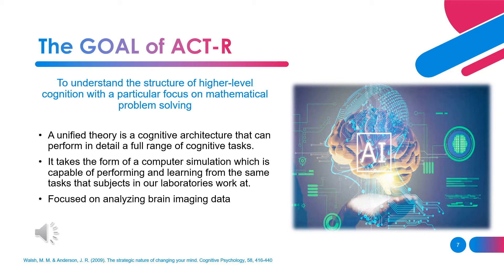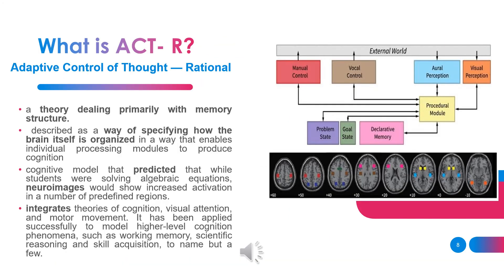Focus on analyzing brain imaging data. Brain imaging data is used to get information about what is happening under the hood — or, as people perform complex tasks. This information is being used to help design instruction that will enable students to extend their knowledge beyond the procedures that are being taught. What is Adaptive Control of Thought, Rational, or ACT-R?